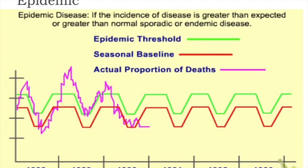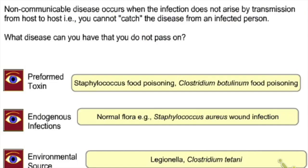Non-communicable disease occurs when infection does not arise by transmission from host to host — you cannot catch it from an infected person. For example, food poisoning toxin is non-communicable unless you eat the same contaminated food. You cannot get food poisoning simply by sitting next to someone who has it.